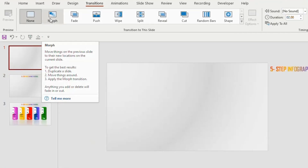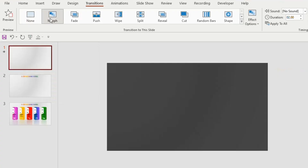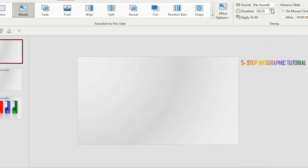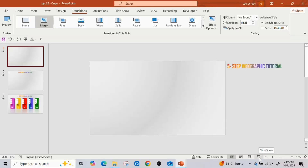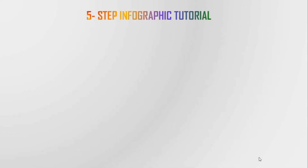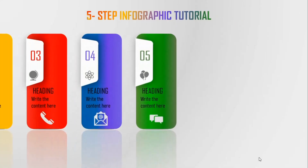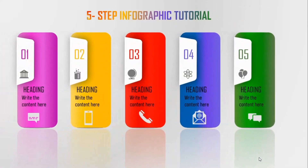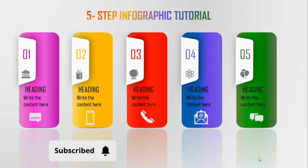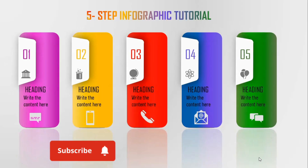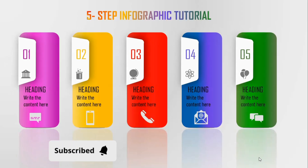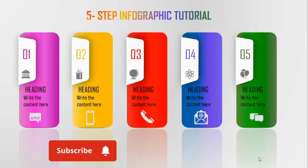Go to the first slide, click on Transitions and select Morph. Change the duration to 2.25 seconds and click Apply to All. Now when we click on the slideshow, we can observe the infographic PPT showcasing in a creative way. Thank you for watching and don't forget to like, share, and subscribe — see you in the next video.